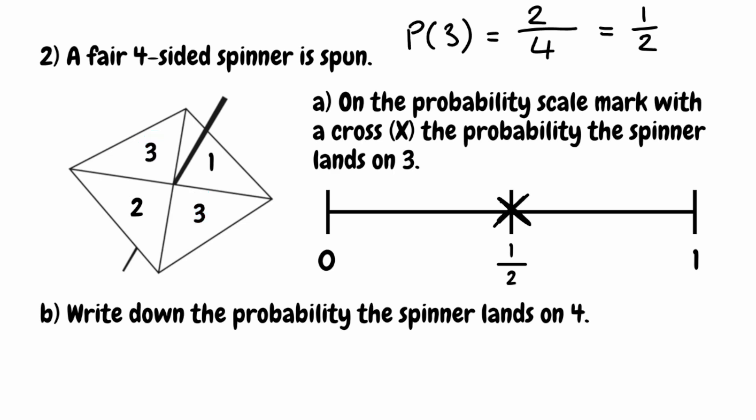For part B, we want to write down the probability that the spinner lands on four. Looking at the spinner, there are no fours, so it is impossible for the spinner to land on a four, meaning the probability is zero. If we wrote it as a fraction, we'd have zero successful events over the four total events — zero divided by four — which gives us zero.